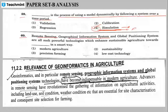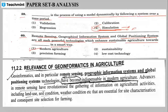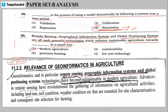Question 60: remote sensing, geographic information system, and global positioning system are powerful technologies that enhance sustainable agriculture towards modern agriculture in a smart way. The correct answer states that remote sensing, GIS, and GPS technologies have become indispensable in modern agriculture.